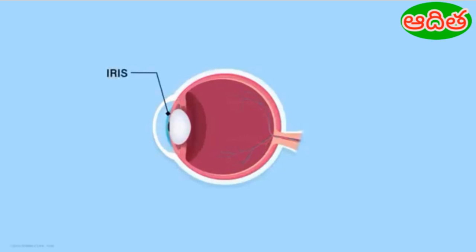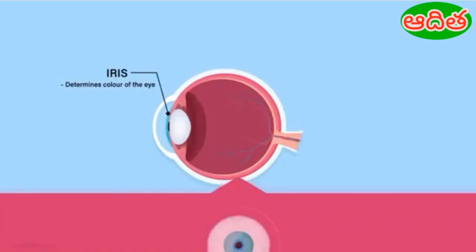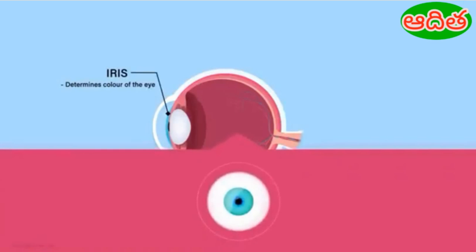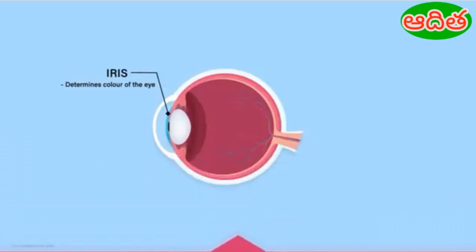Behind the cornea there is a dark muscular structure called the iris. The iris determines the colour of the eye. For instance, when we say that a person has blue eyes, it means that the colour of the iris of that person's eye is blue. There is a small opening at the centre of the iris for light to enter, called the pupil.